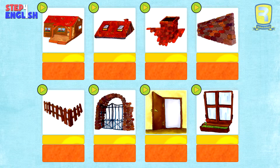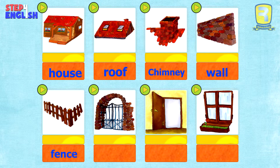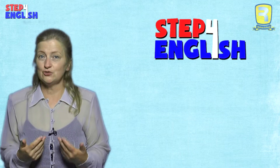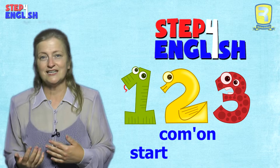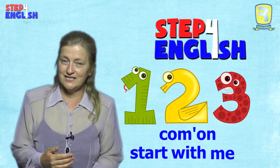Cover one word and repeat. House, roof, chimney, wall, fence, gate, door, window. Step for English, one, two, three, come and start with me.